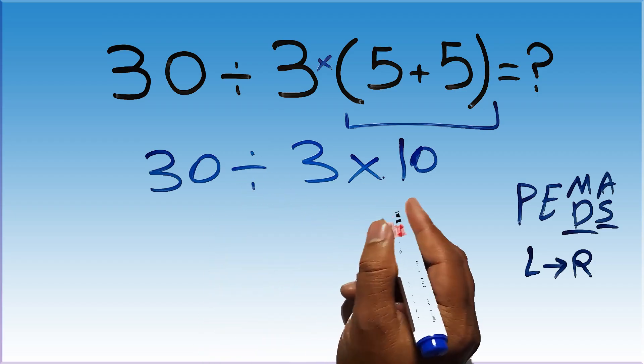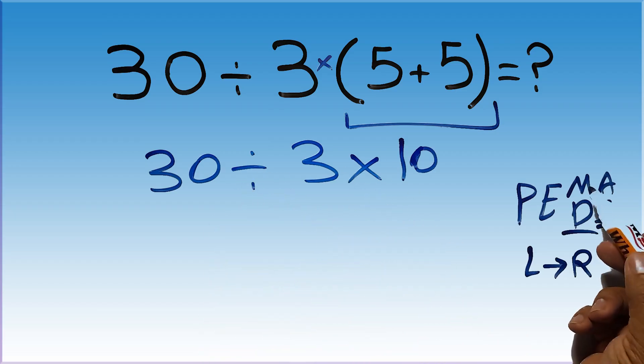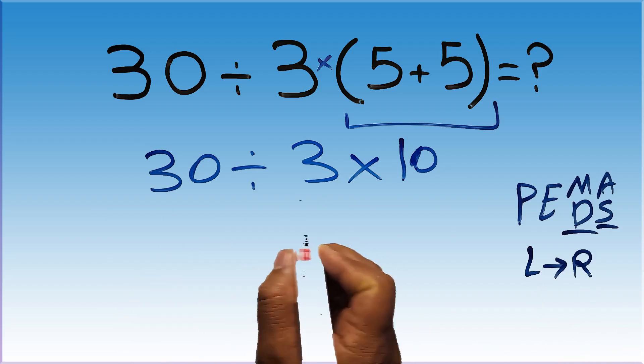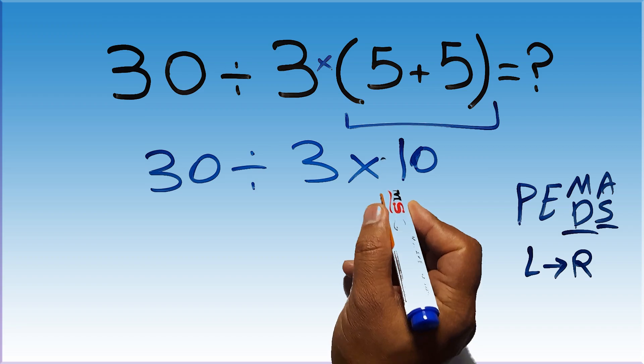Now, we have one division and one multiplication. As I said, multiplication and division have equal priority, and we have to work from left to right. So here, first we have to do this division, then this multiplication.